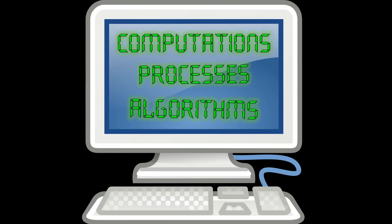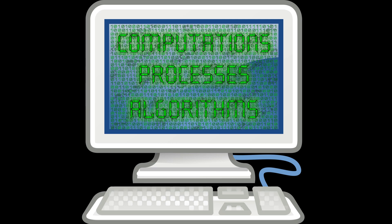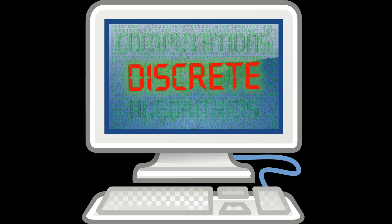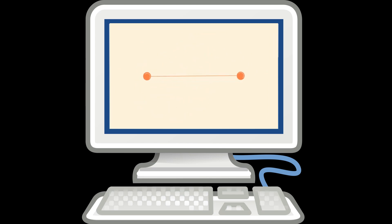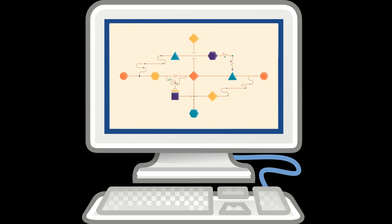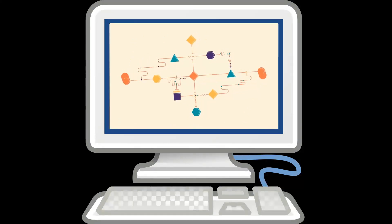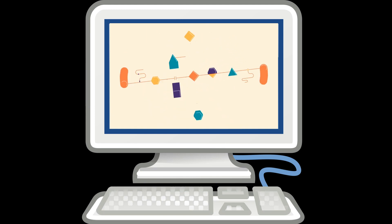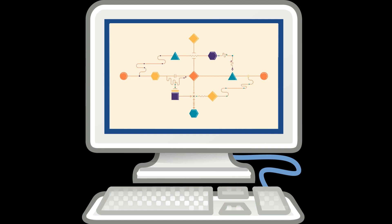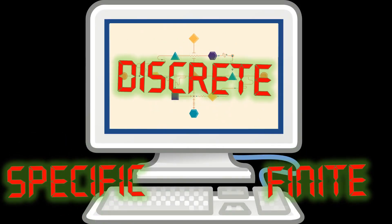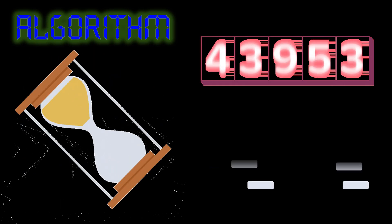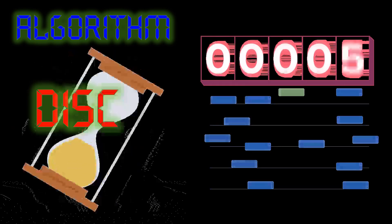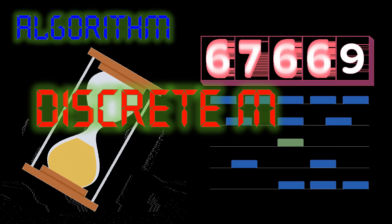All the computations, processes, and algorithms being done by a computer are based on these binary values, which makes all of them discrete as well. An algorithm, for example, is a step-by-step list of instructions to the computer, and it is basically what makes a computer program possible. It can contain testing of Boolean operations, executing a function on a specific condition, exiting and entering, starting or stopping a procedure, and more — all within a specific finite discrete structure. Even when you want to determine the amount of time an algorithm needs to run, you will need to count the number of operations it needs to perform — a finite, specific counting process, and again, discrete mathematics.